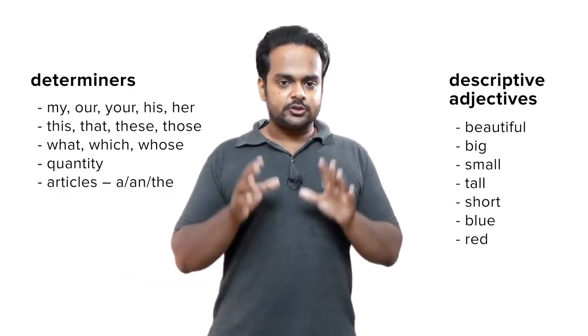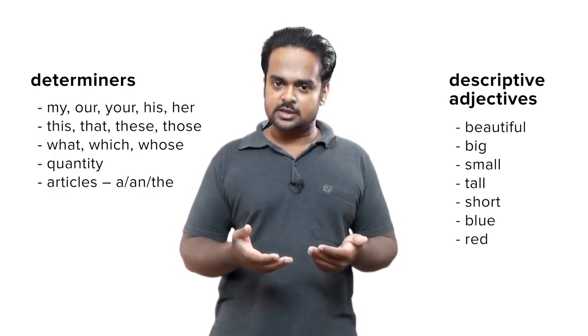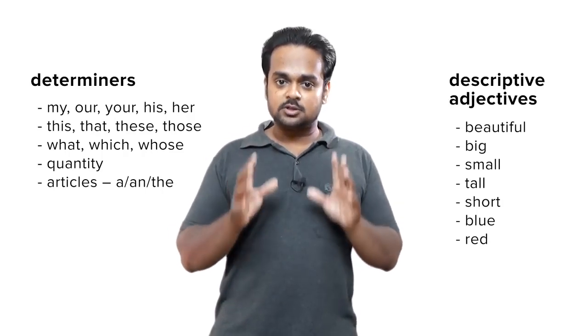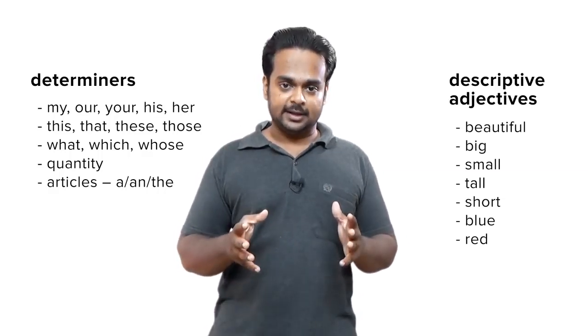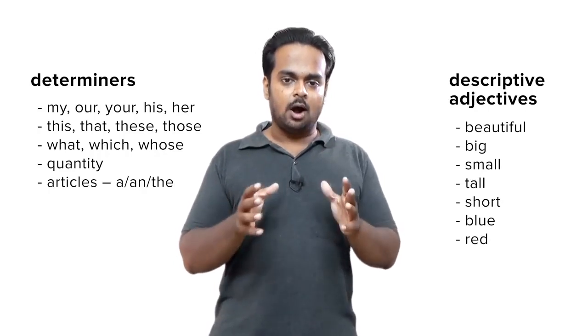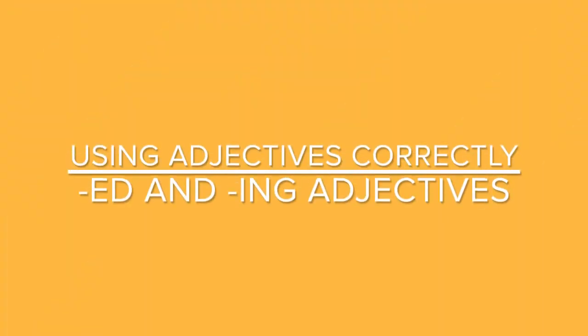Now, all determiners are adjectives, but we will discuss these in other lessons because each one of them is a big topic. In this lesson, we're going to focus on descriptive adjectives and we will look at how to avoid common errors with them. In English there are lots and lots of descriptive adjectives, and one area where students commonly make mistakes is adjectives formed from verbs using the endings ed and ing.